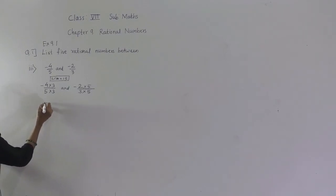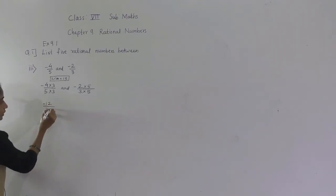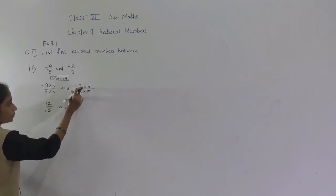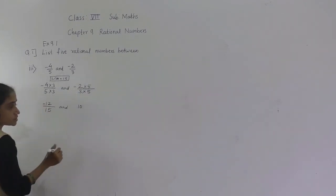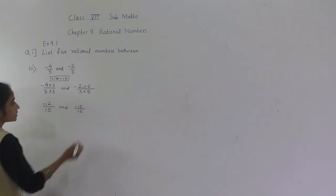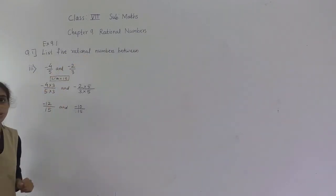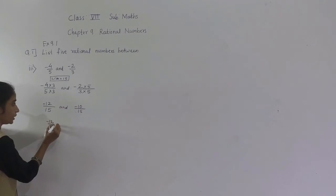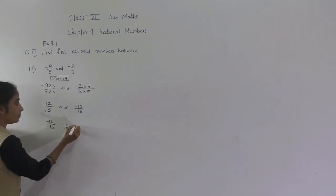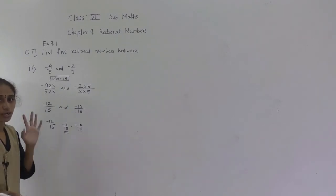4 threes are 12, and since one is negative the result is minus 12 upon 15. Then 2 fives are 10, giving minus 10 upon 15. But between minus 12 upon 15 and minus 10 upon 15 we can find only one rational number — minus 11 upon 15 — but we need 5 rational numbers.